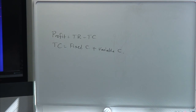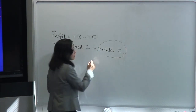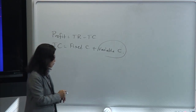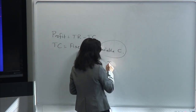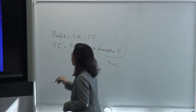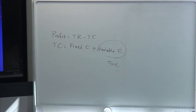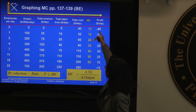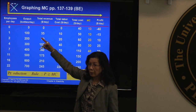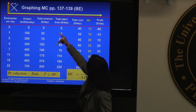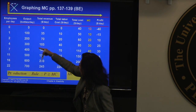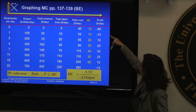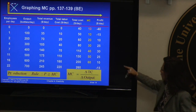Variable cost, in the example we gave, is the number of workers you hire. That's your total variable cost — the total labor cost — because that goes up when you hire more workers. So you add your fixed cost to get your total cost, and then your profit in the last column is derived.